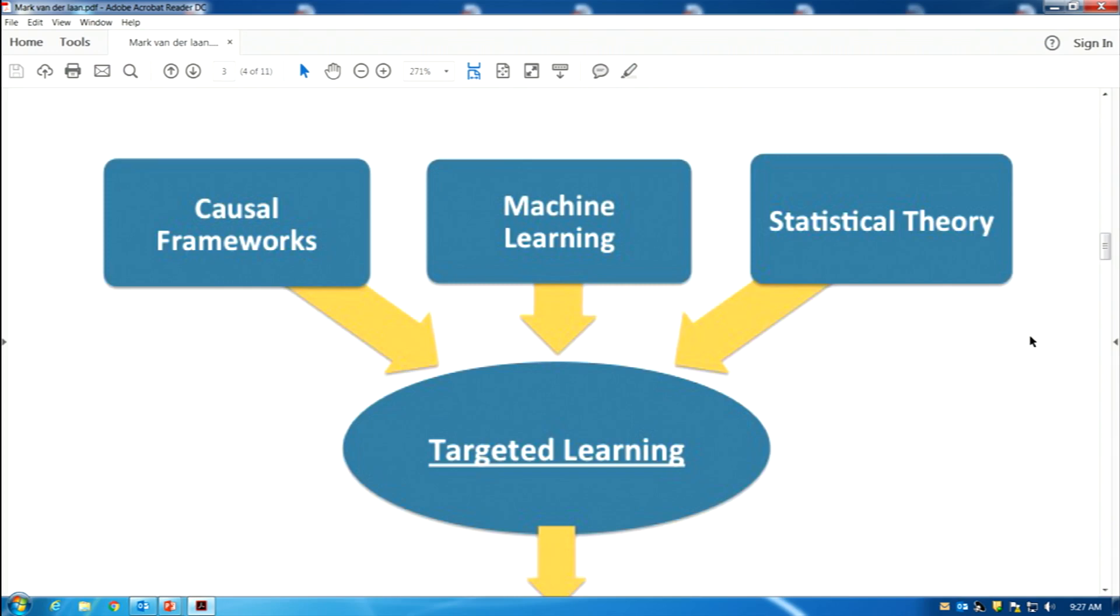So, what targeted learning does, it takes the causal modeling, the state of the art machine learning, and the deep statistical theory all together into an approach, which is targeted maximum likelihood estimation combined with super learning. And this allows us to get more precise answers for causal questions of interest.